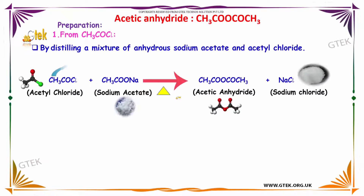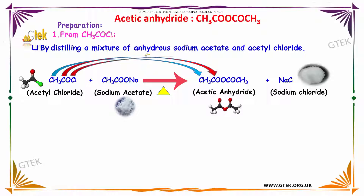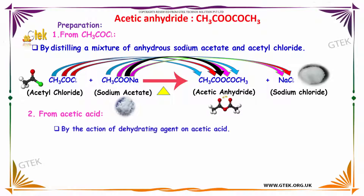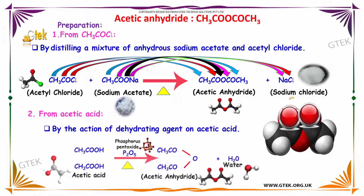Now let us study about Acetic Anhydride. It is prepared by distilling a mixture of anhydrous sodium acetate and acetyl chloride. That is, when acetyl chloride is made to react with sodium acetate, it produces acetic anhydride along with sodium chloride.